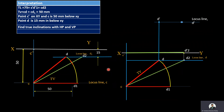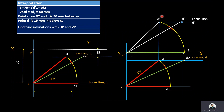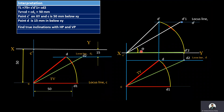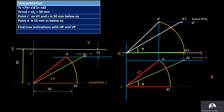After drawing the final top view, our objective is to draw the final front view and measure true inclinations with HP and VP. C-dash D1-dash is the true length in the front view and C-dash D-dash is the final front view. Theta is the true length inclination with HP and phi is the true length inclination with VP. How to draw the final front view and how to get theta and phi values will be seen in detail through the construction.